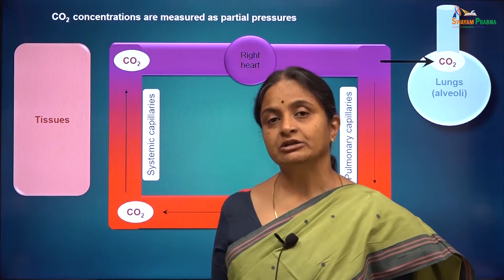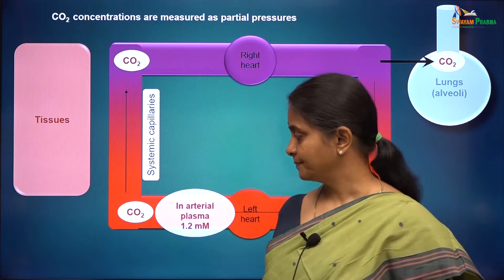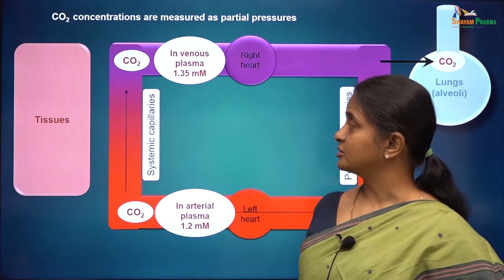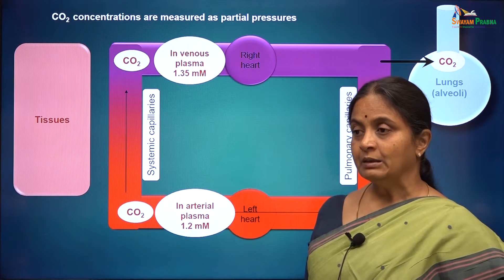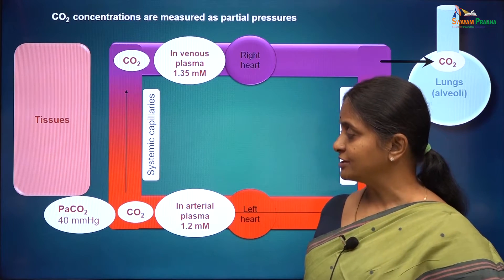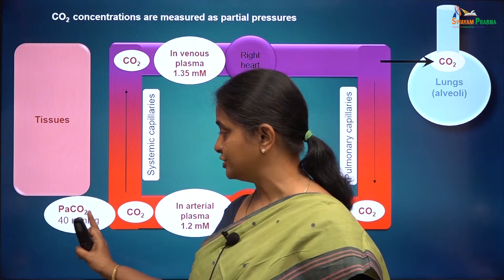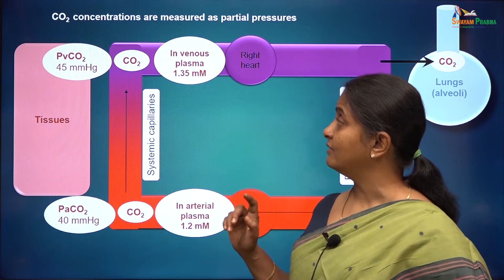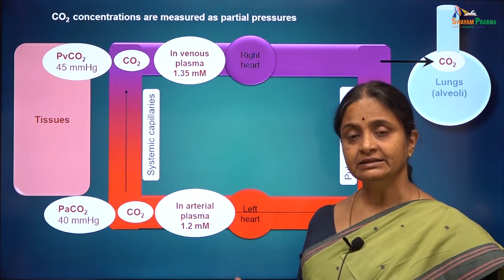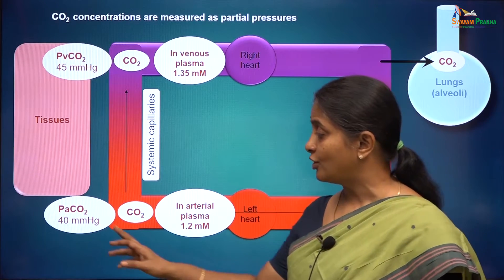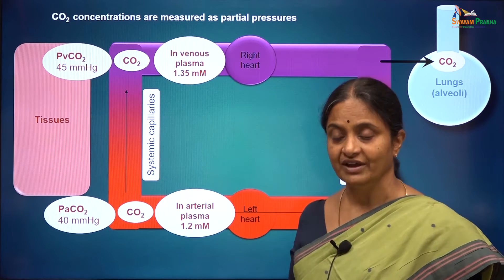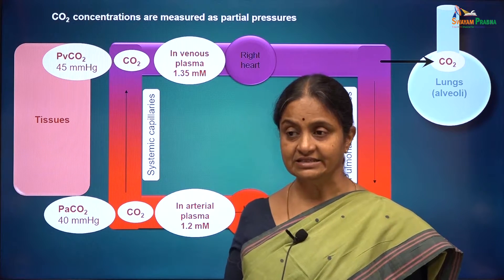Now we will see how carbon dioxide concentrations are measured in blood. The arterial carbon dioxide concentration is 1.2 and the venous concentration is 1.35 millimolar. Blood gas reports give partial pressure of carbon dioxide: PaCO2 at 40 mmHg and venous PCO2 at 45 mmHg. The conversion factor is 0.03: 40 × 0.03 = 1.2 and 45 × 0.03 = 1.35. What do we mean by partial pressures of gases in liquids?